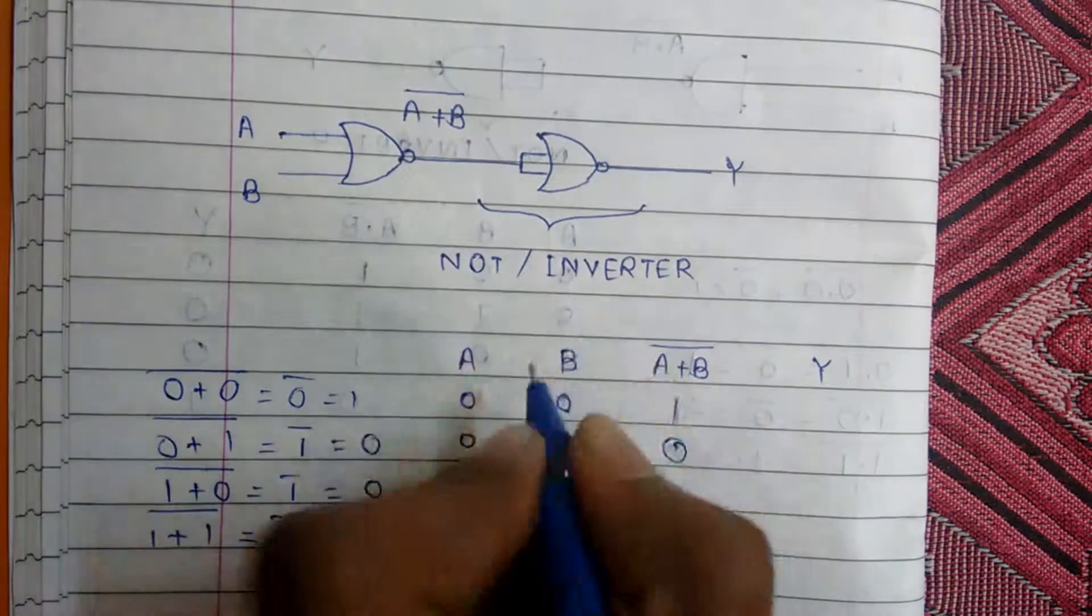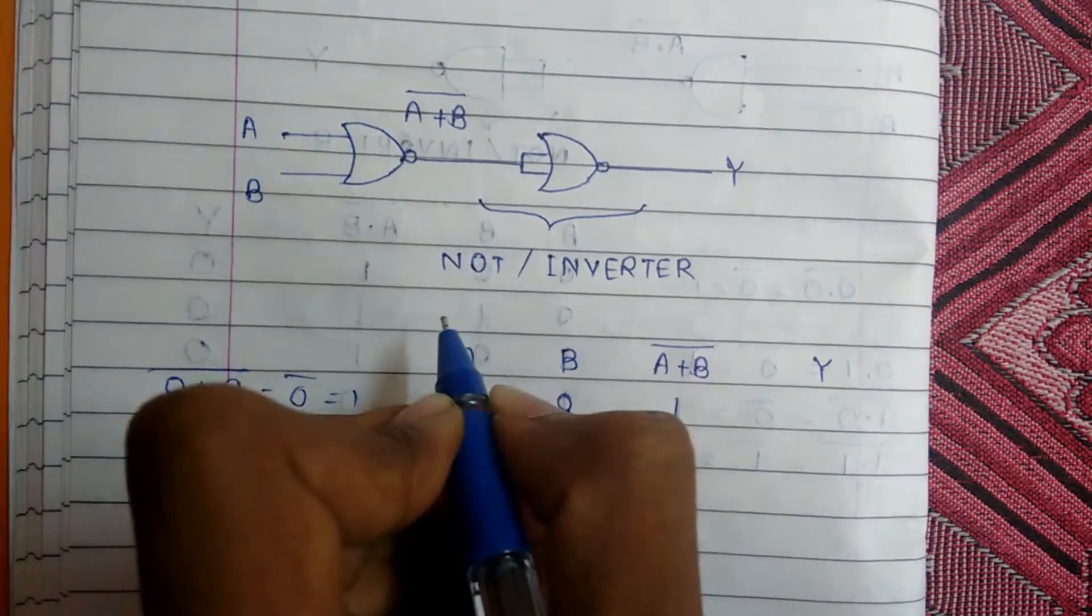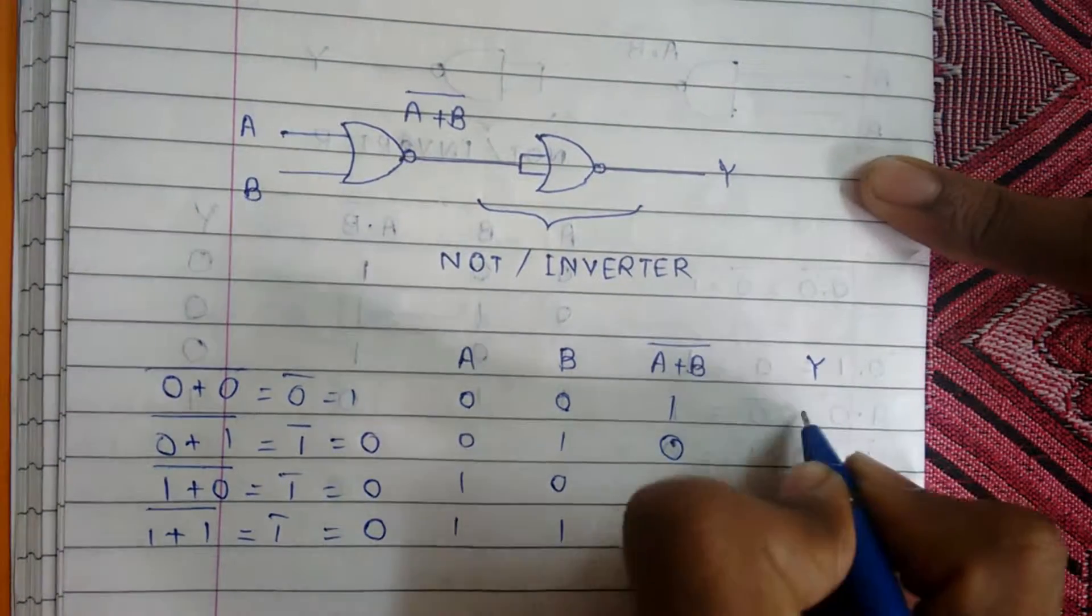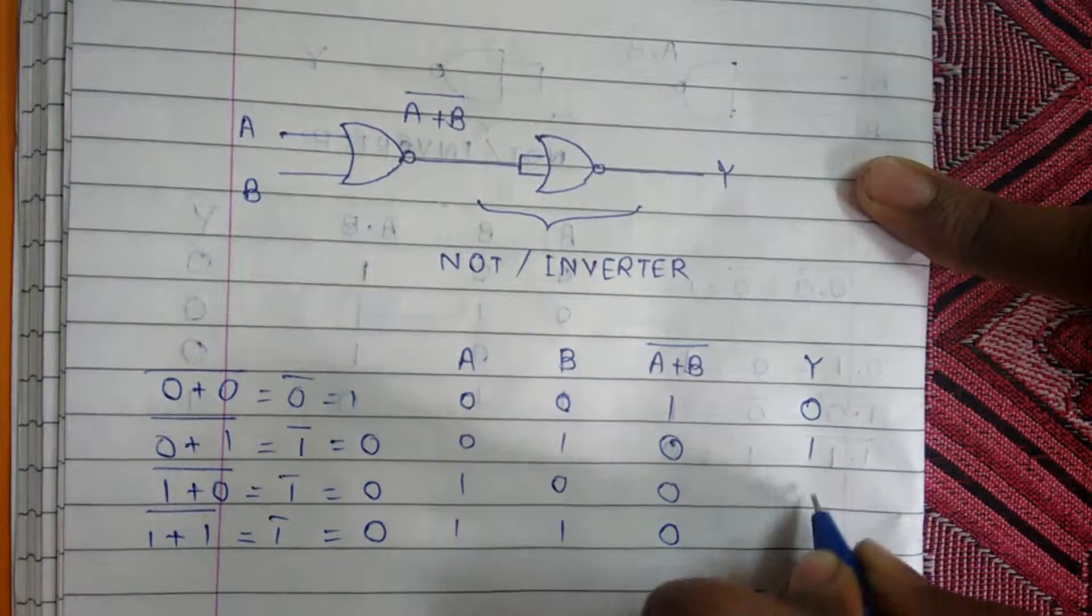If you have seen our previous videos, then this is NOR gate, that is inverter circuit. So our final output becomes 0 1 1 1.